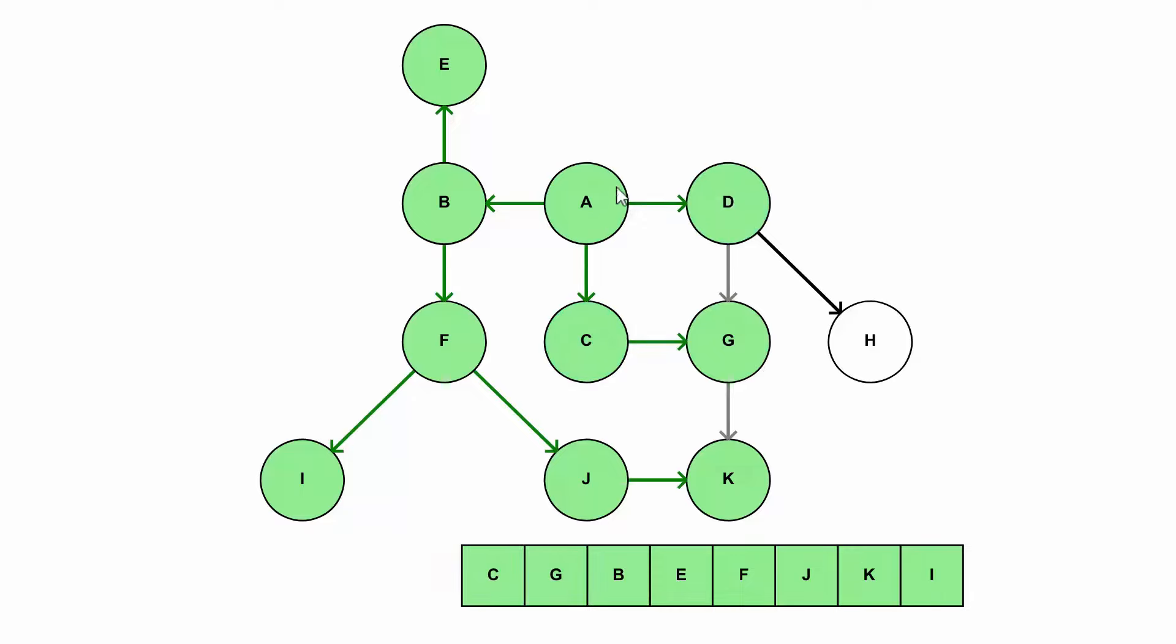and still not done with A, because it still has children we haven't explored. But now we go into H, which we are done with, and we're done with D. And now we're fully done with A. So this is a sequence where we have all the kind of dependencies. So A is a dependency for everyone. So that's first.